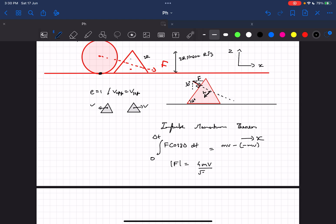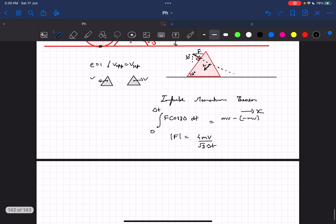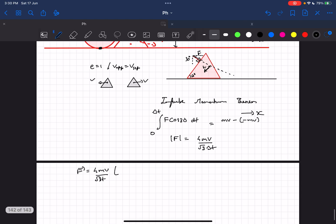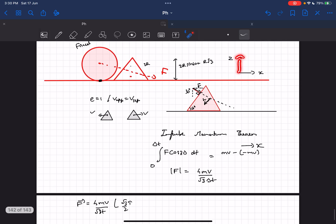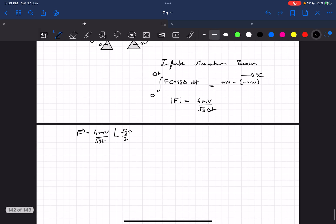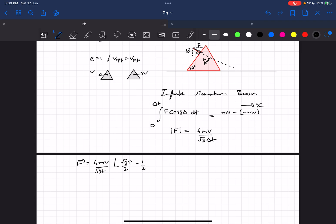They ask the value of the force as a vector form, so it will be 4mv upon root 3 delta t times cos 30 i cap. Cos 30 i cap would be root 3 by 2 i cap. And in this problem they've given the z axis to be upwards, so it will be minus sin 30 k cap. So this is the value of the force F.